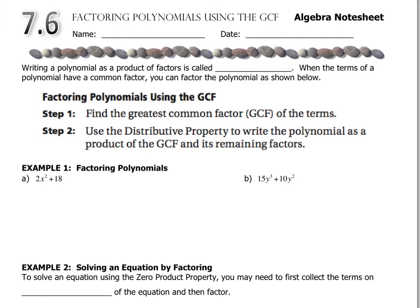In this section we're going to talk about factoring polynomials using the GCF. Remember, GCF stands for greatest common factor. So what we're going to do is take polynomials which have more than one term and factor out whatever factor is common to both or to all three.